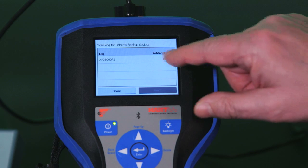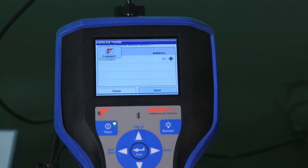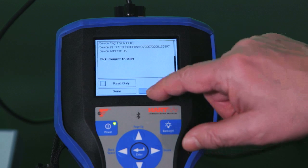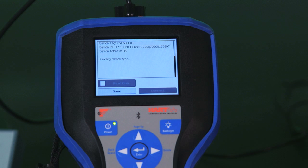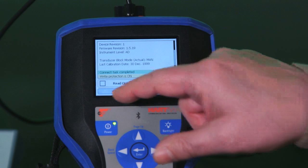Okay so it's found one DVC. I'm going to select that device. I'm going to go next and I'm going to connect to that device. Okay connection has now been established so we're done with the connection.